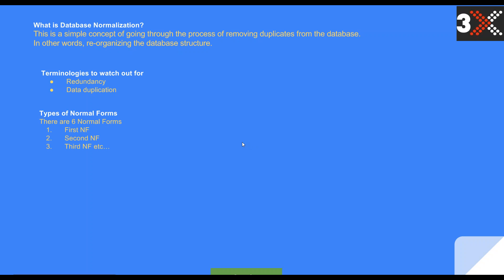What are the types of normal forms that we have? Generally speaking, there are six normal forms. But in the industry, you will find in most cases that the database has been normalized to the third normal form. So we have first, second, third, fourth, fifth and sixth normal forms. But in this session, we'll look at how to normalize a database table from the first to the second and third normal form, because there are rules that we need to follow step by step to get to a state where we can say our table is being normalized.